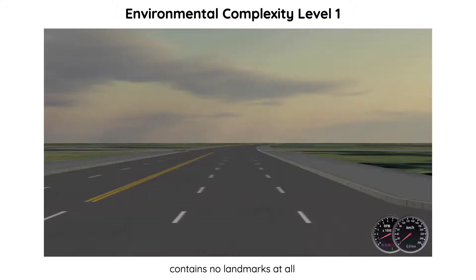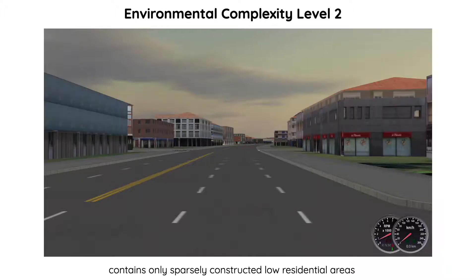We created all environments using the ESRI City Engine. An open area scene was used as the least complex scene. It has a simple road network and surrounding green space, and contains no landmarks at all. An apartment building scene is an example of environmental complexity level 2, where the road is surrounded by sparse apartment buildings.